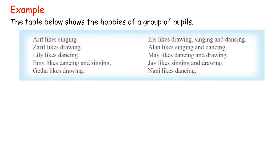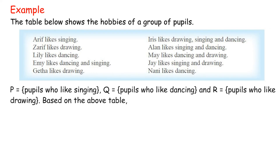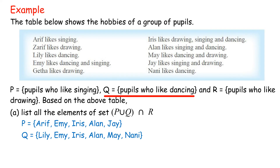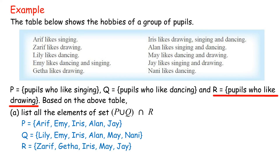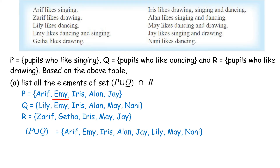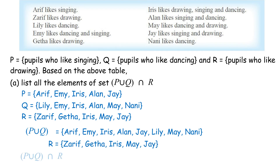Example. The table below shows the hobbies of a group of pupils. P equals {pupils who like singing}, Q equals {pupils who like dancing}, and R equals {pupils who like drawing}. Part A: List all the elements of set (P union Q) intersect R. P = {Arif, May, Iris, Allen, J}, Q = {Lily, May, Iris, Allen, Nani}, R = {Zarif, Geta, Iris, May, J}. P union Q = {Arif, May, Iris, Allen, J, Lily, Nani}. R = {Zarif, Geta, Iris, May, J}. Therefore (P union Q) intersect R = {J, Iris, May}.